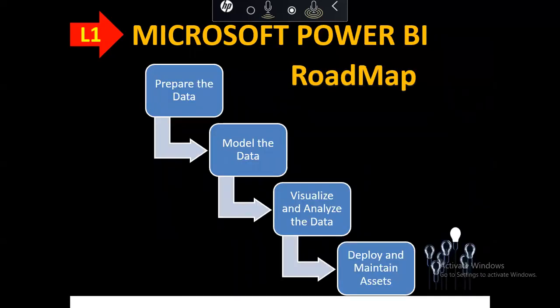Now I will tell you how this course is structured. I have divided it into four modules. The first module is to prepare the data — how to get data into Power BI and observe it. For example, if we have an Excel sheet with some columns or rows containing null values, we will clean and simplify that data. We will cover all of these data preparation steps.